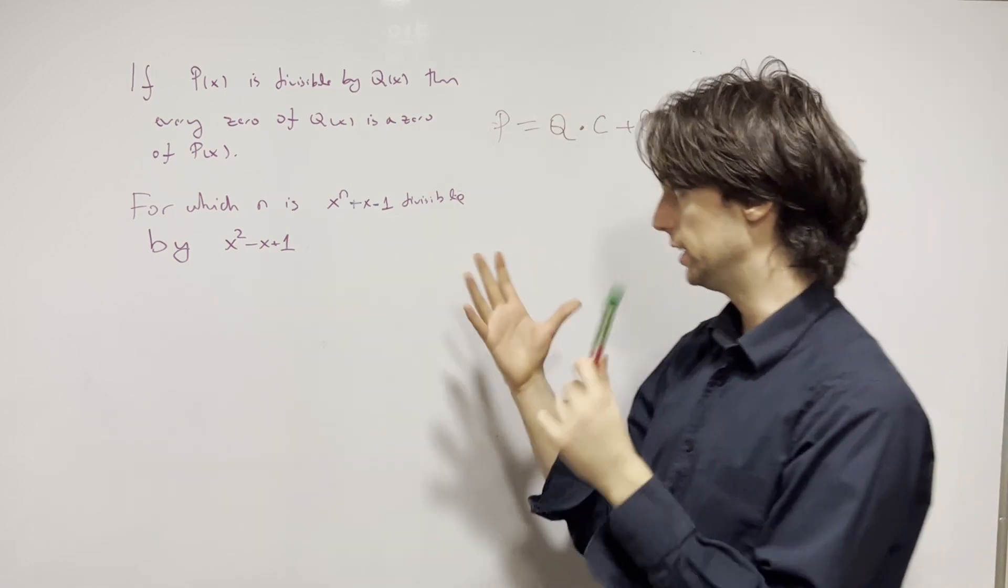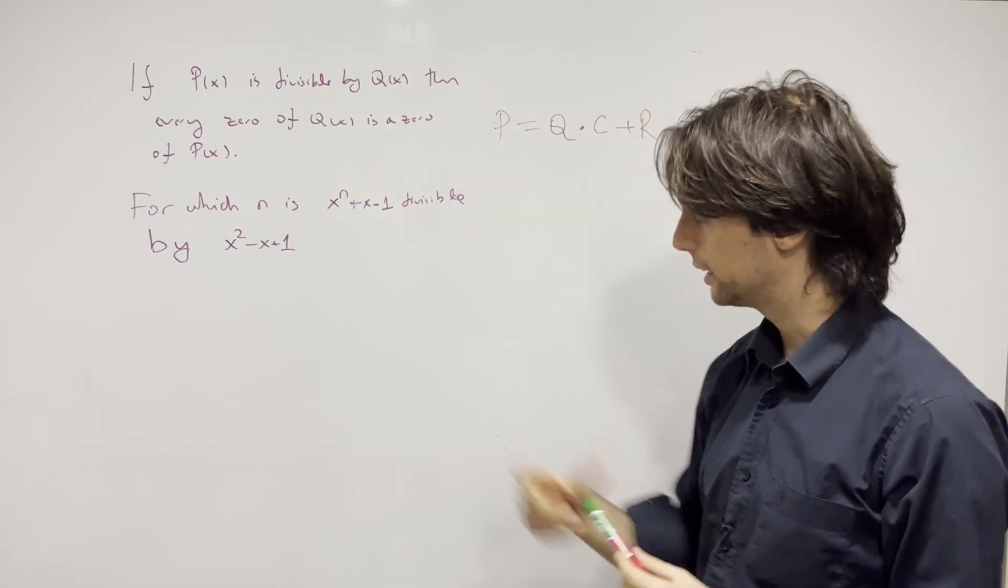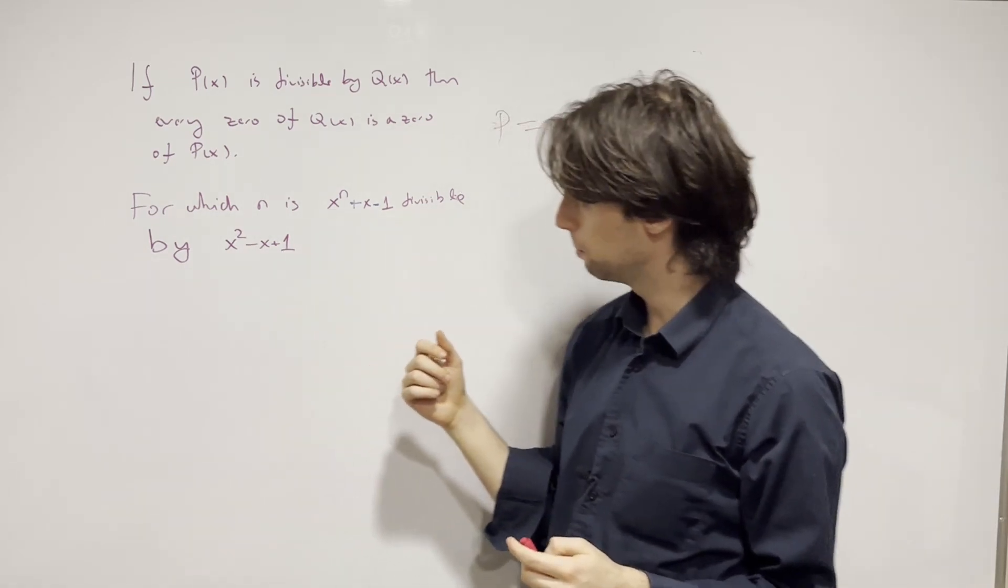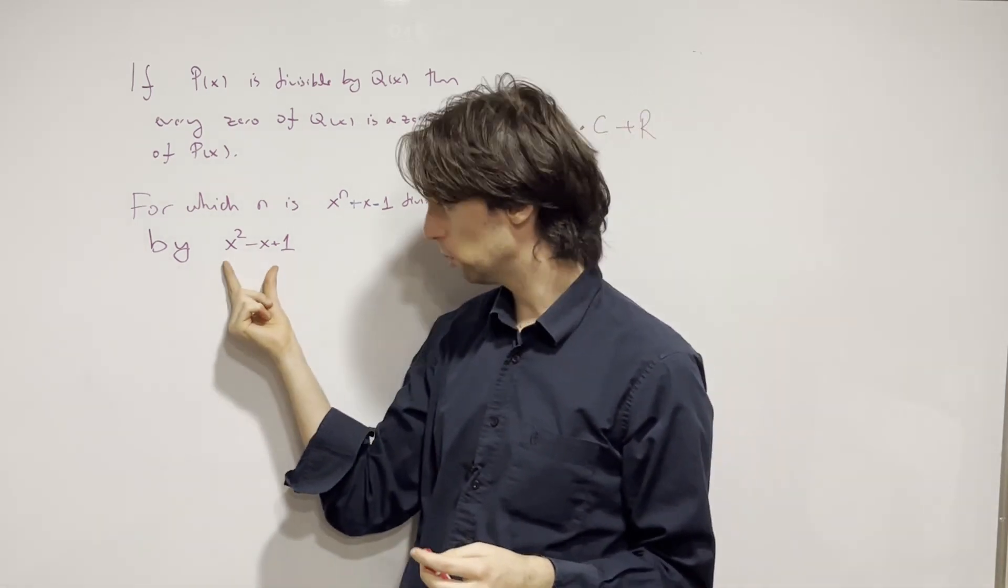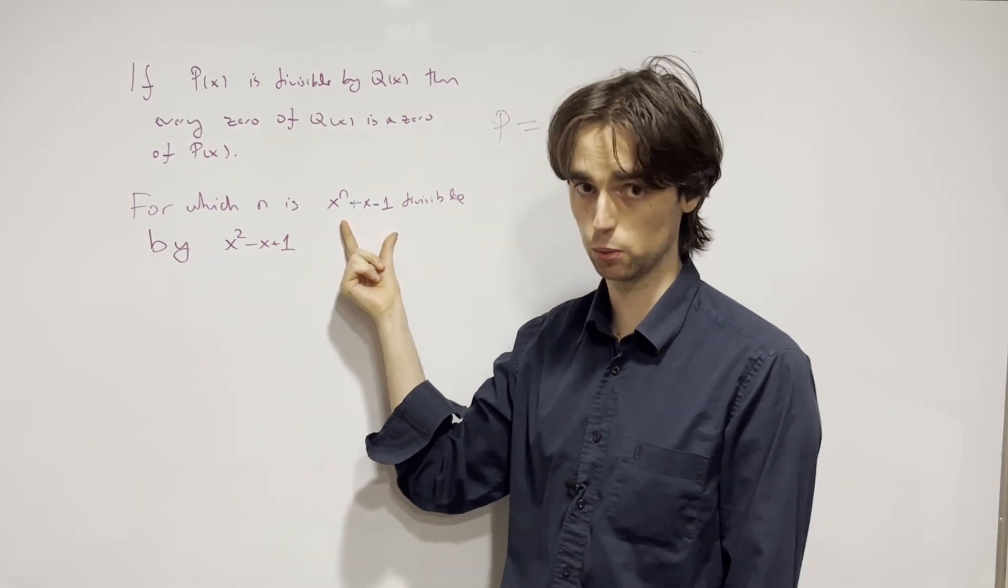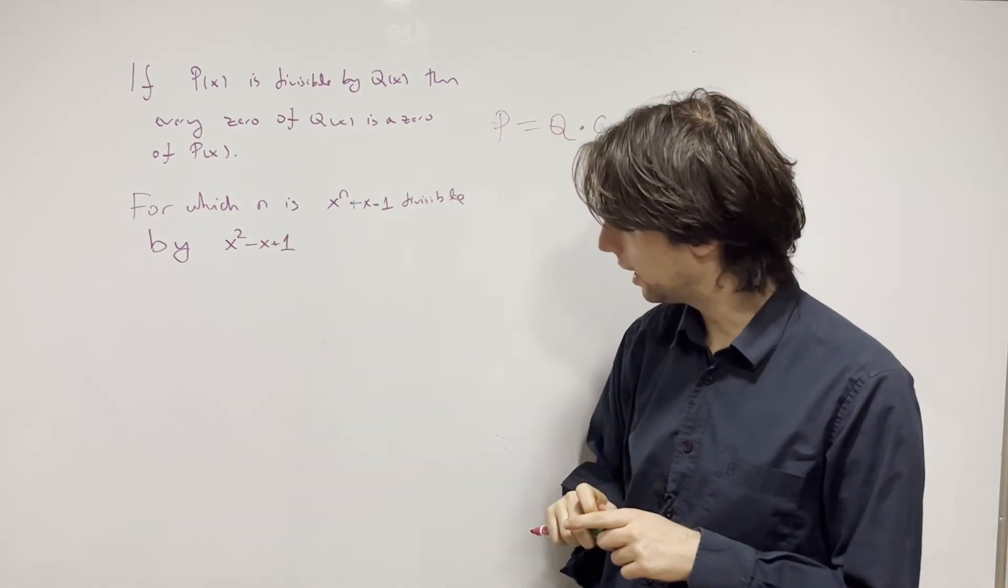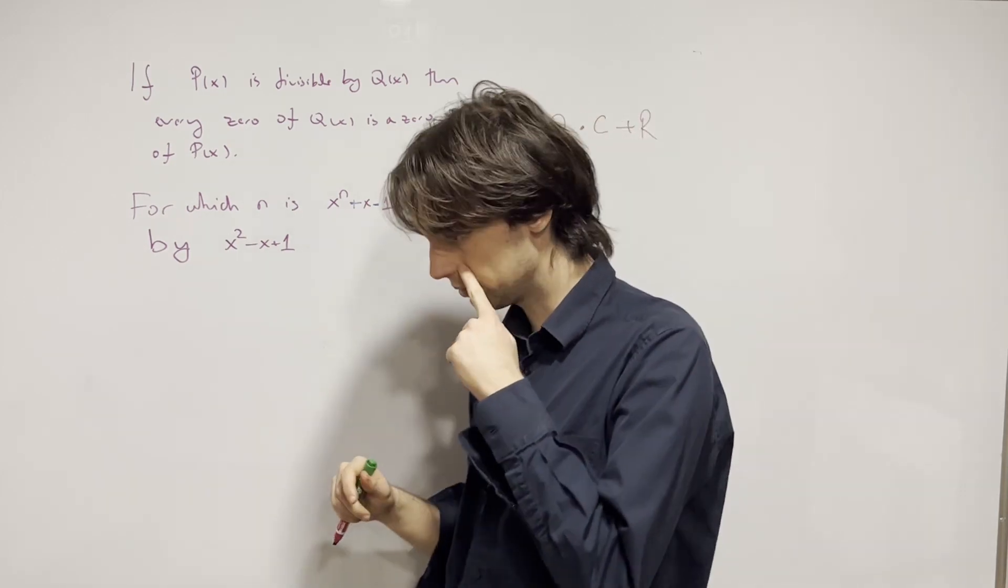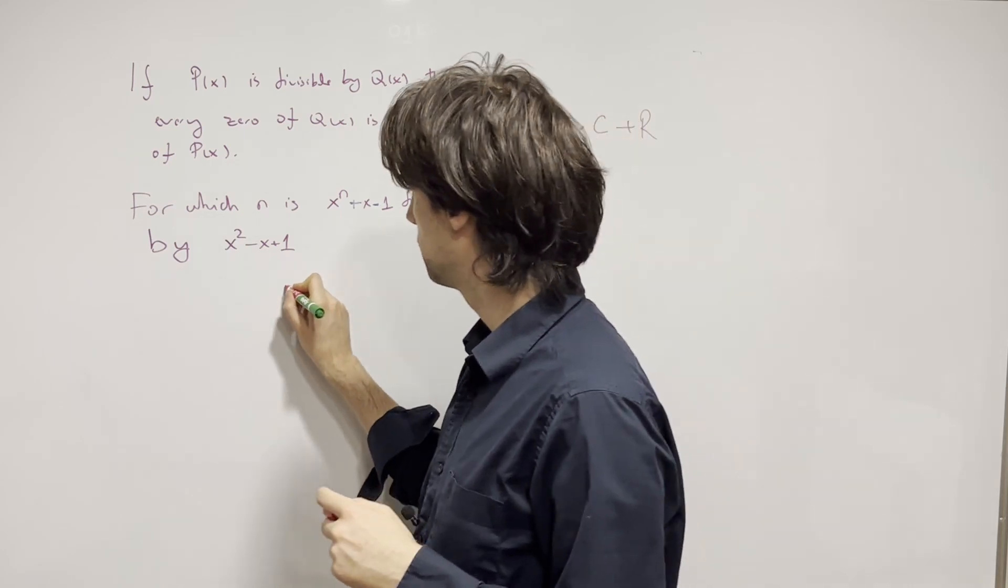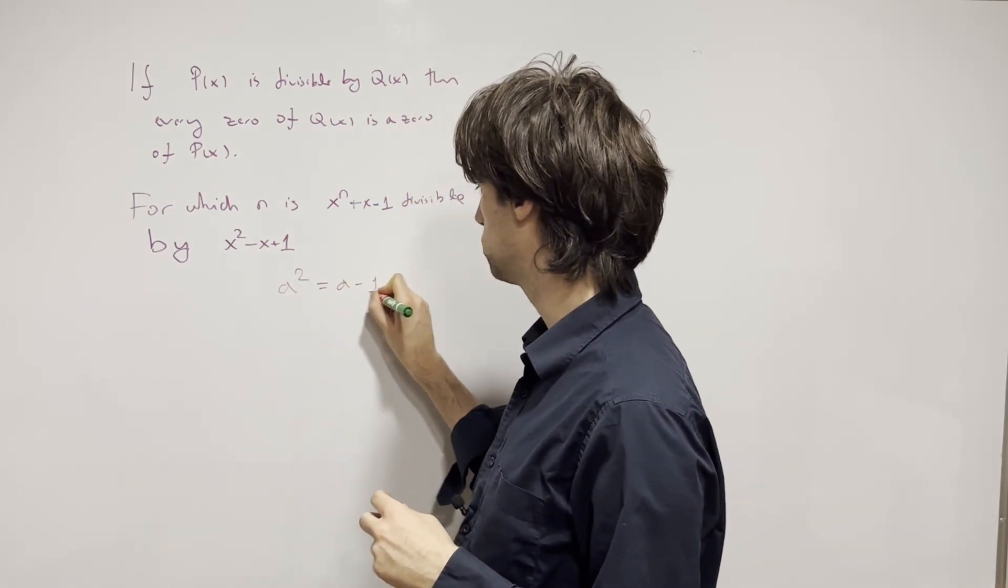Here's the idea: this dividing means that the zeros of this polynomial are going to be zeros of this one. That's what that means. So what do we need to have? We need to have that a squared equals a minus one, that's what these zeros hold.